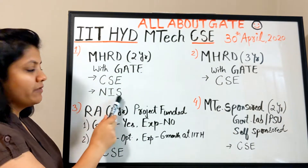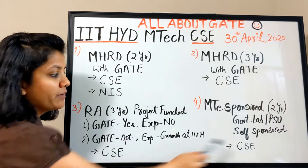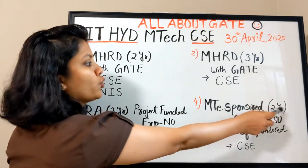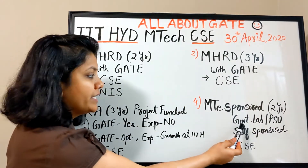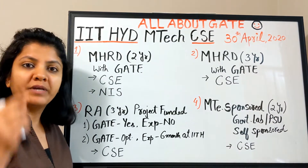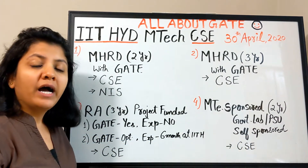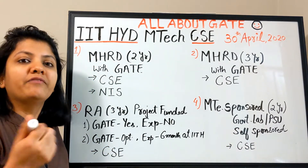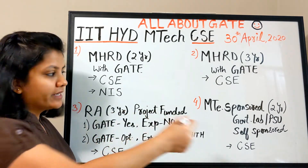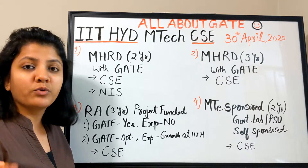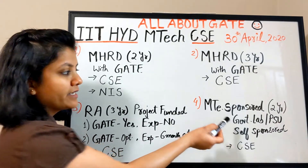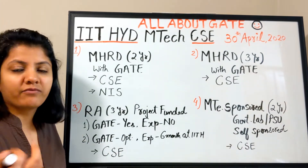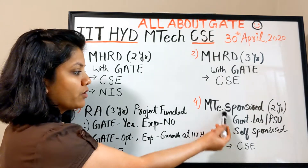Note that only MTech two-year is available in the new NIS branch; all other programs are available only in computer science. The fourth category is MTech sponsored two-year. Sponsorship can be by a government lab or PSU — you must be an employee there and your employer must be willing to sponsor your MTech. The second sponsorship type is self-sponsored, in which case you are not eligible for any stipend from the institute.